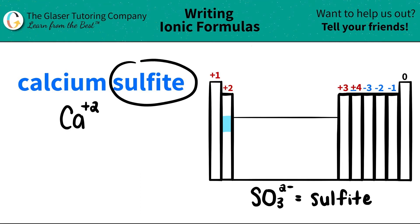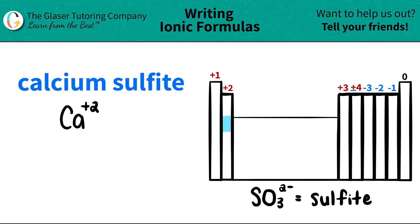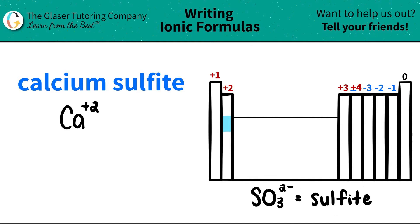Now the next part is sulfite. Here's a trick: if you have an -ITE ending, you know that this is a polyatomic ion — but remember, polyatomics are not on the periodic table, you have to memorize them. So we have to know that sulfite is SO₃ with a negative two charge. Flashcard them out — you have to memorize your polyatomics.